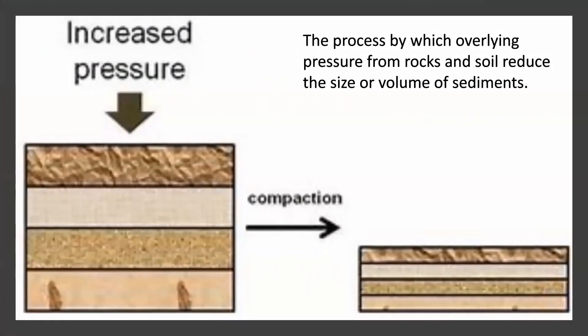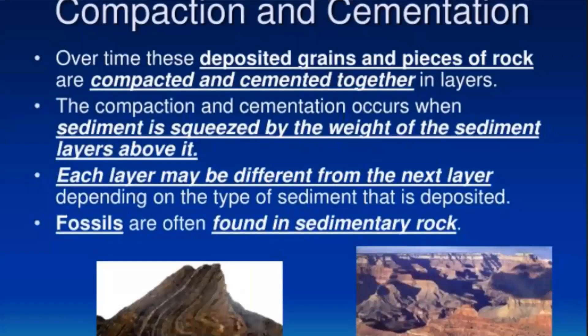Compaction is the process by which overlying pressure from rocks and soil reduce the size or volume of sediments. The larger picture off to the left is compacted into the smaller picture, reducing the volume of it. Over time, the deposited grains and pieces of rock are compacted and cemented together in layers. The compaction and cementation occurs when sediment is squeezed by the weight of the sediment layers above it. Each layer may be different from the next depending on the type of sediment deposited at that time.